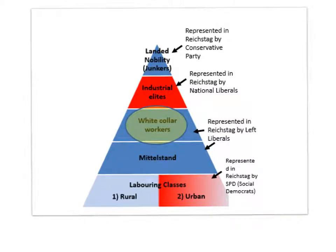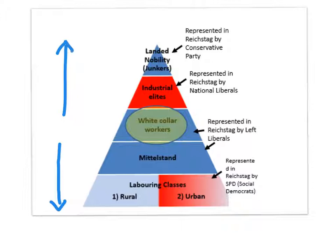Now that's a diagram of what I call the social pyramid that we've already looked at in class. It represents society as a pyramid in which the larger group — the labouring classes — are at the bottom, and the smaller group are at the top: the middle and upper classes. So broadly speaking, you've got at the bottom the lower classes (LC), then the middle classes, and then at the top the upper classes.